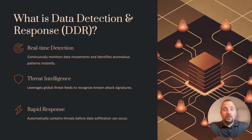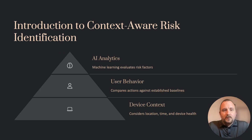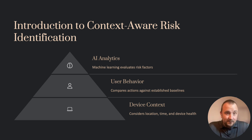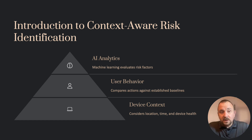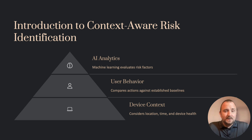Let's dive in and learn more about protecting critical information within our organizations. Now that we've introduced data detection and response, let's talk about how context-aware risk identification is important. It's an approach that combines AI analytics with user behavior and device context to proactively identify potential risk. AI analytics uses machine learning to evaluate a wide array of risk factors, going beyond traditional rule-based systems. User behavior is analyzed and compared against established baselines to detect anomalies that could signal a security threat.